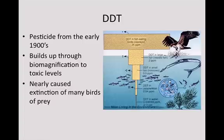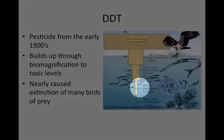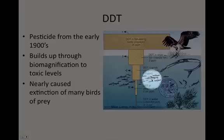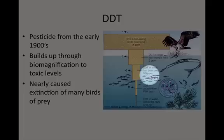After a while, that water gets used up by producers and consumers such as zooplankton, and we see it build up to about 0.4 parts per million. At this amount, it's still too small to see effects in those zooplankton. Those zooplankton get eaten by small fish such as minnows, and now we see about 0.5 parts per million. We might start to see some very small effects at this point, but the real problem is that these small fish are completely inundated with DDT, and as we move from small fish to larger fish, this becomes a major issue.